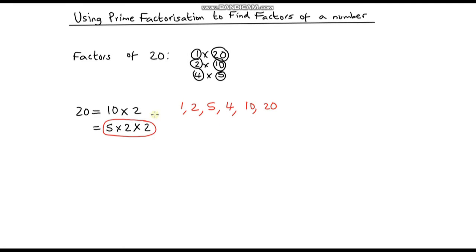You may be wondering why go to all this trouble when it's quite easy to just list the factors. The reason is that with much larger numbers it's a lot harder to identify some of the factors, but if we can break the number down it makes it a lot easier. Plus, it's a lot of fun! So let's do some more examples.